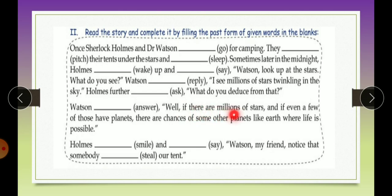Watson answered, well, if there are millions of stars and if even a few of those have planets, there are chances of some other planets like earth where life is possible. Holmes smiled and said, Watson, my friend, notice that somebody stole our tent.